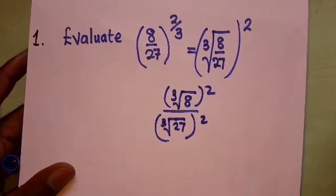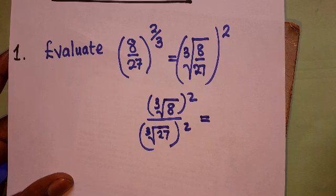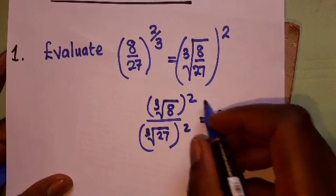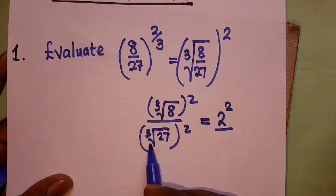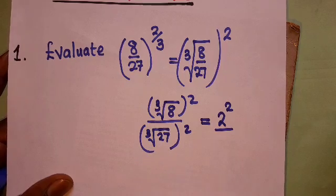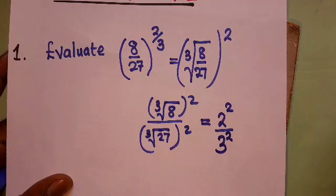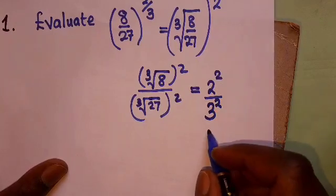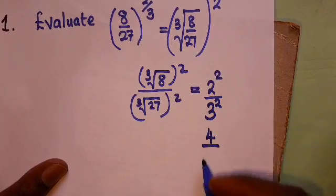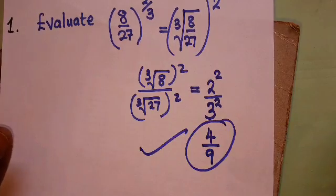The cube root of 8 - the number you multiply by itself three times to give you 8 - is 2, and you maintain the 2 there. The cube root of 27 is 3 - the number you multiply by itself three times to get 27. Then we have the 2 here. Finally, simplify: 2 times 2 is 4, 3 times 3 is 9. This is your answer: 4/9.